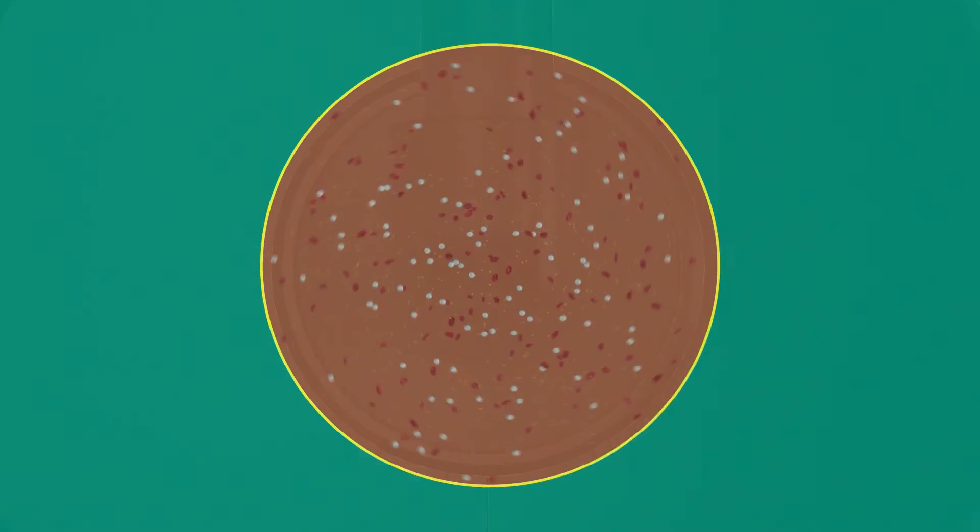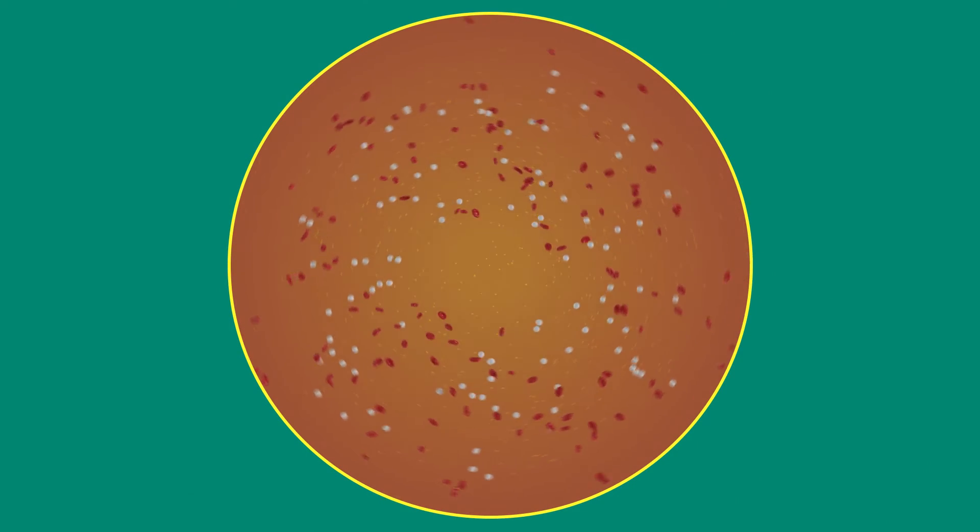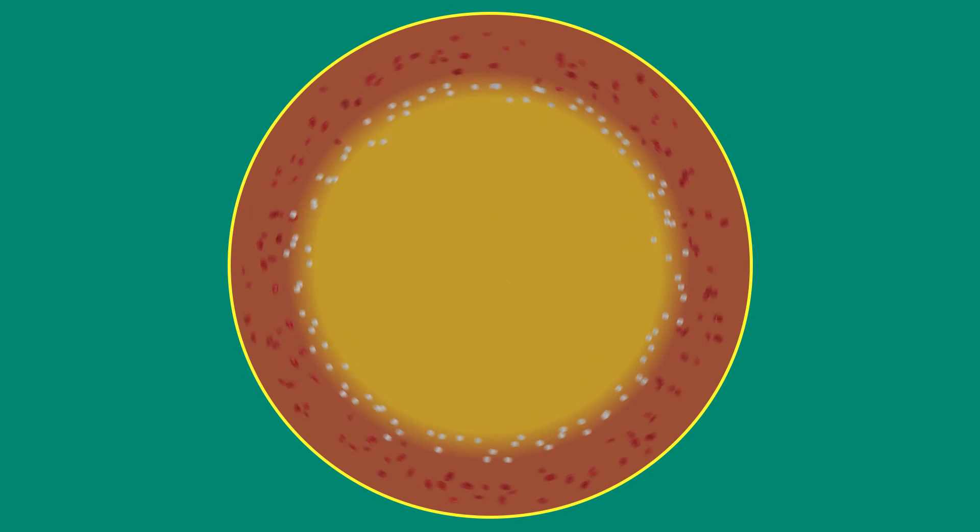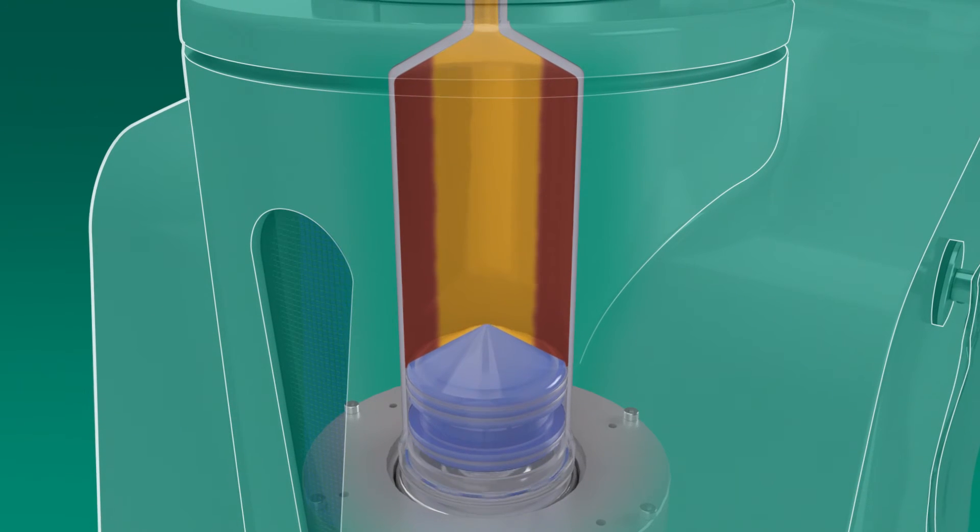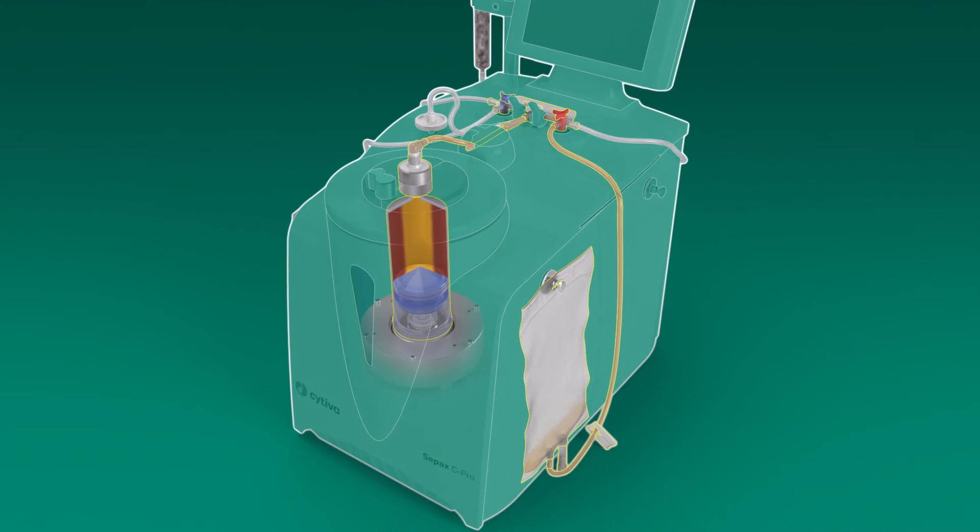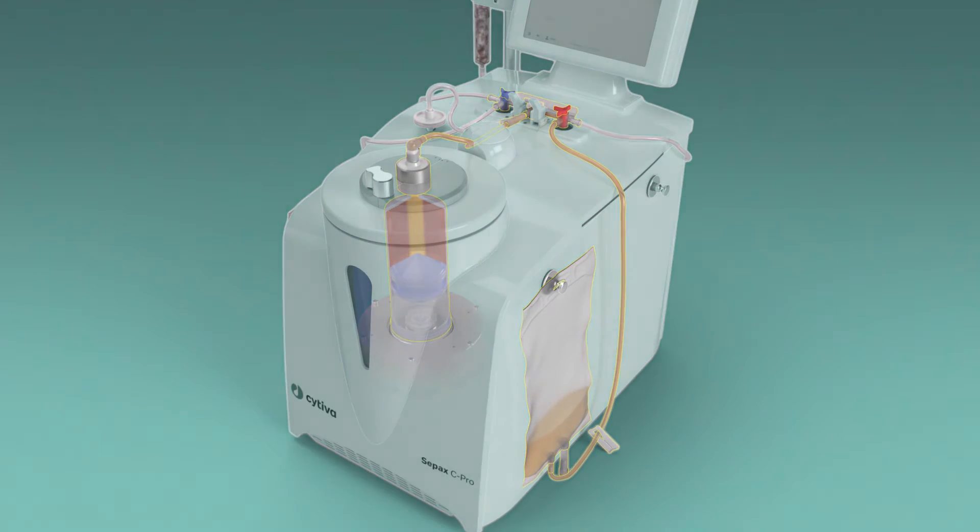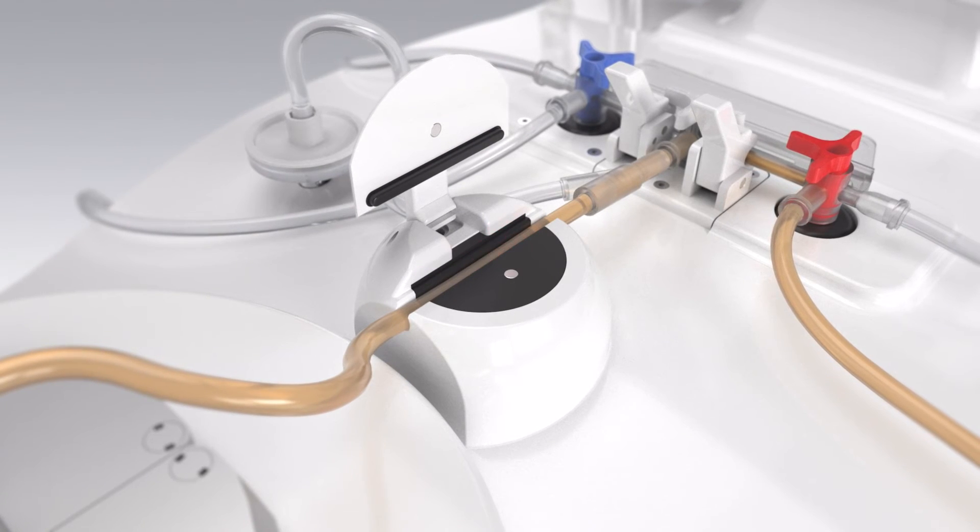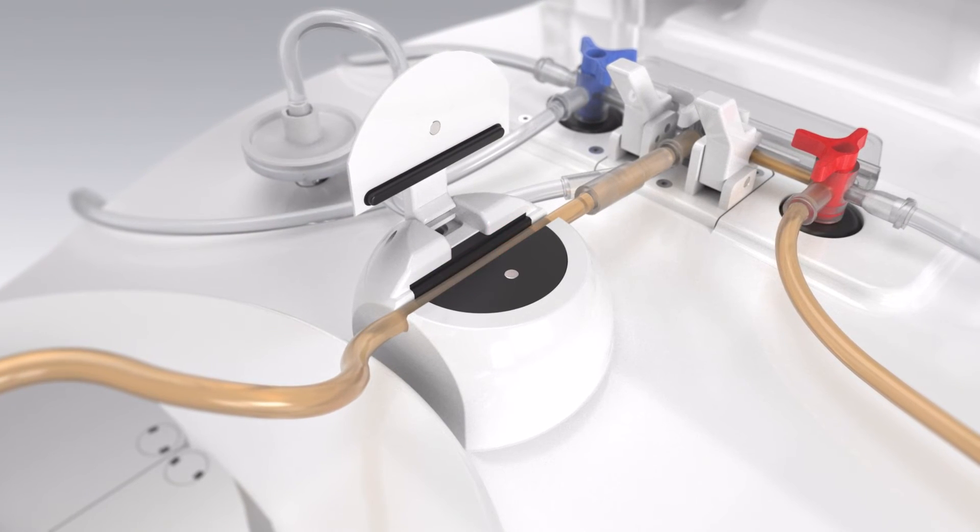During centrifugation, the product fraction with the highest density moves toward the wall of the separation chamber. The supernatant located along the spinning axis of the separation chamber is the first product extracted into the waste bag. The optical sensor detects what passes the optical line to monitor the process.